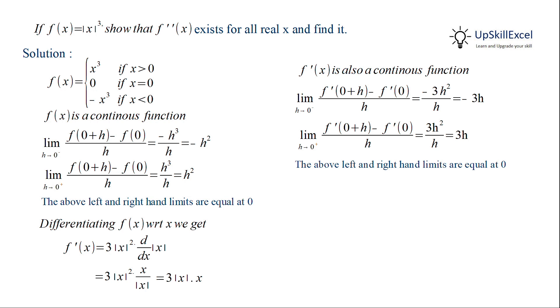So differentiating f'(x) with respect to x and applying product rule as we have two terms |x| and x, then applying derivative of x as 1 and derivative of |x| as x/|x|, we get 3|x| plus x multiplied by x/|x|.